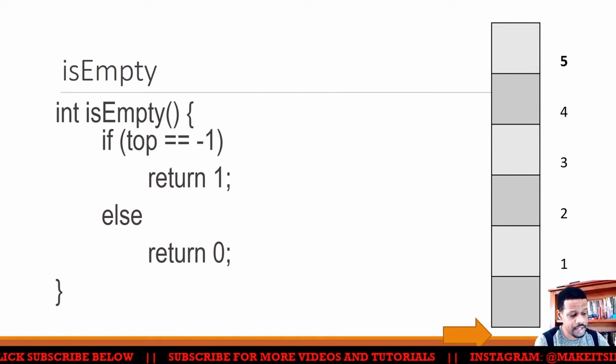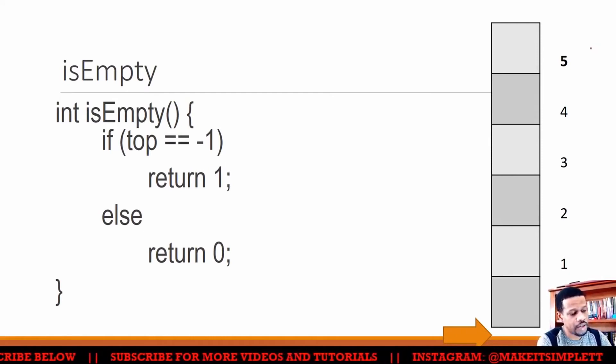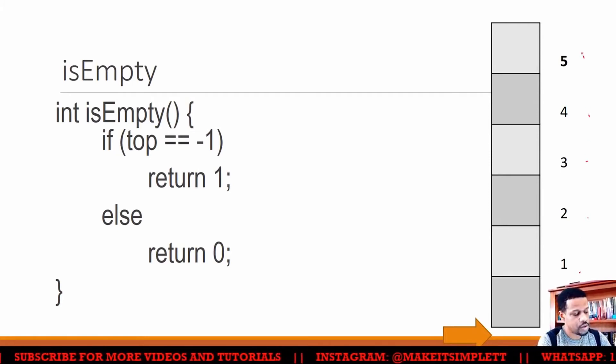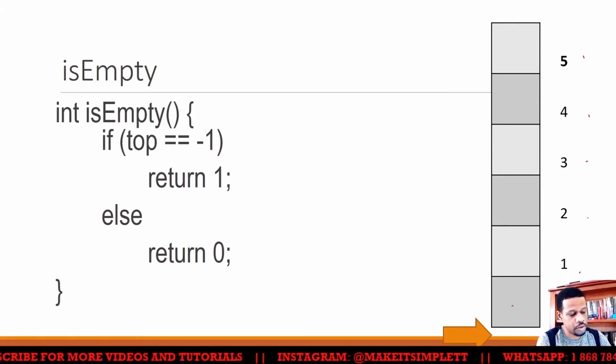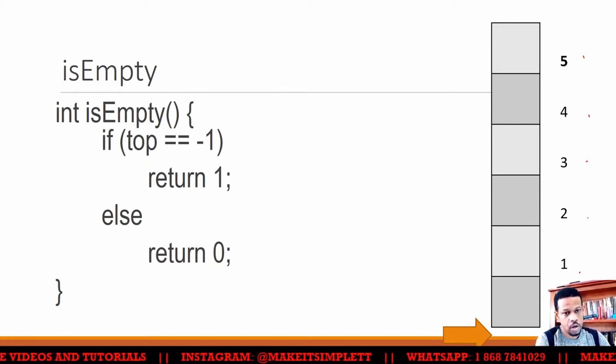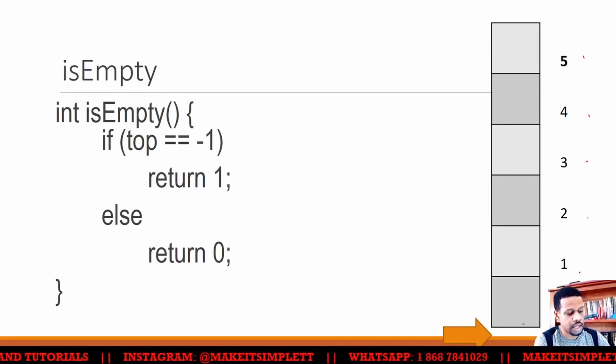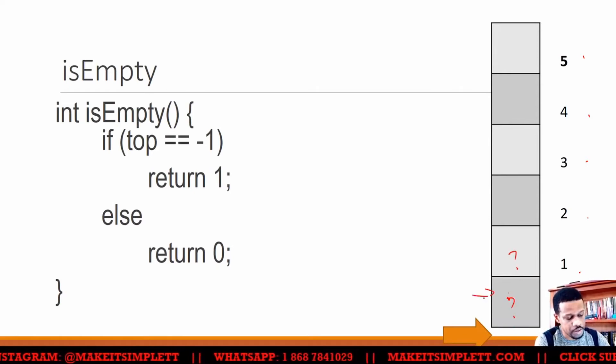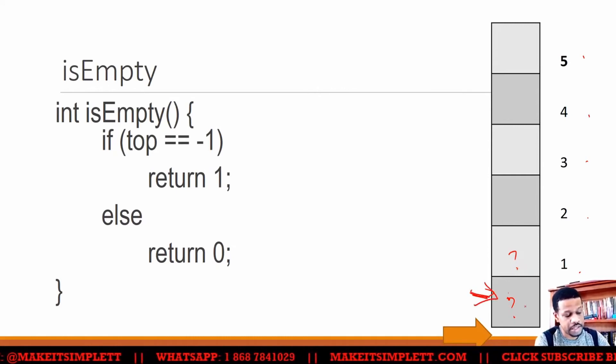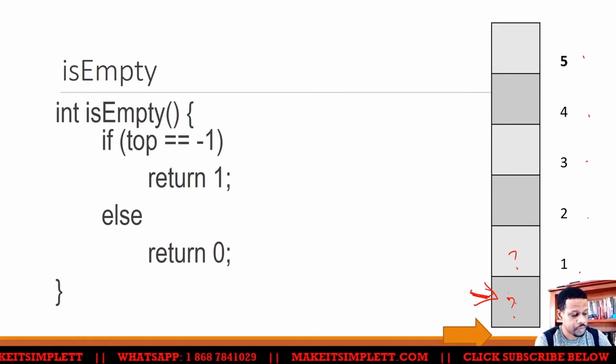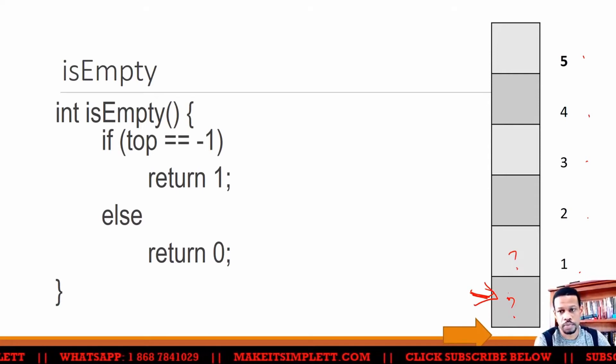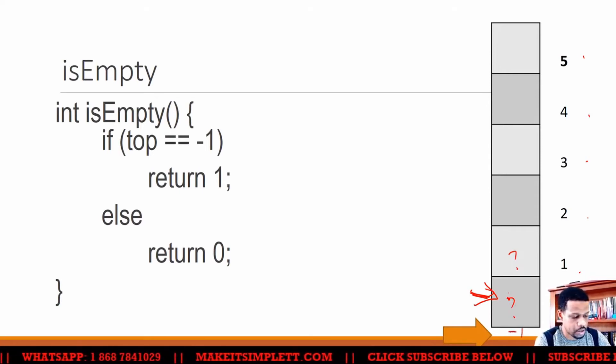So for is empty function, basically you have an array that has six spaces: zero, one, two, three, four, and five. How do you know when it is empty? You know when it is empty when you set the top to minus one. When you set the top to minus one, what you are saying is that there is nothing in here. There's nothing in location zero. If there's nothing in location zero, that means that there is nothing because you have set top to be minus one. So top is minus one.